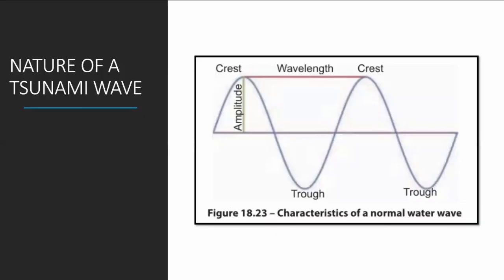The tsunami wave is a type of water wave. If you drop a pebble in a still water surface, you would observe ripples forming on the water surface — this is a water wave. As depicted in figure 18.23, this wave comprises an alternate series of crests and troughs. The maximum distance the water particles travel in the upward direction is known as a crest.